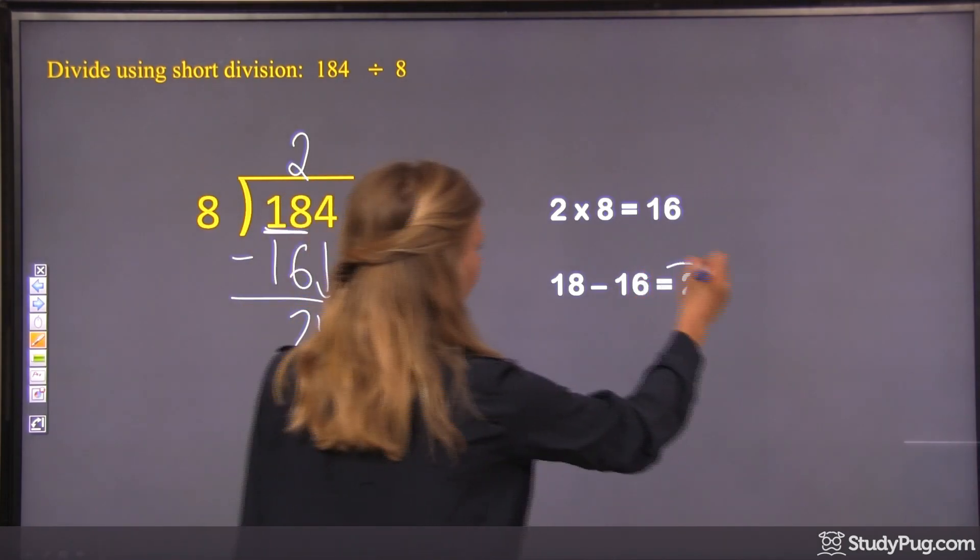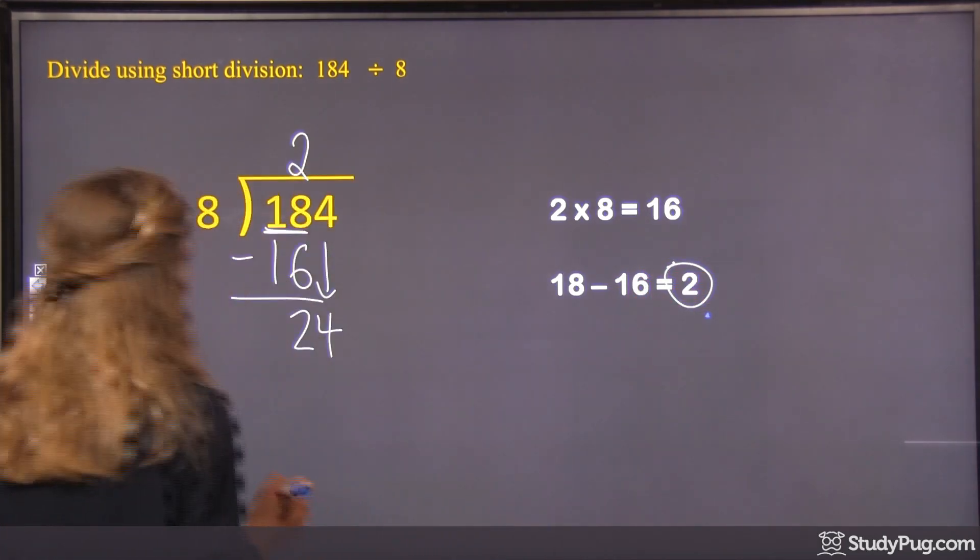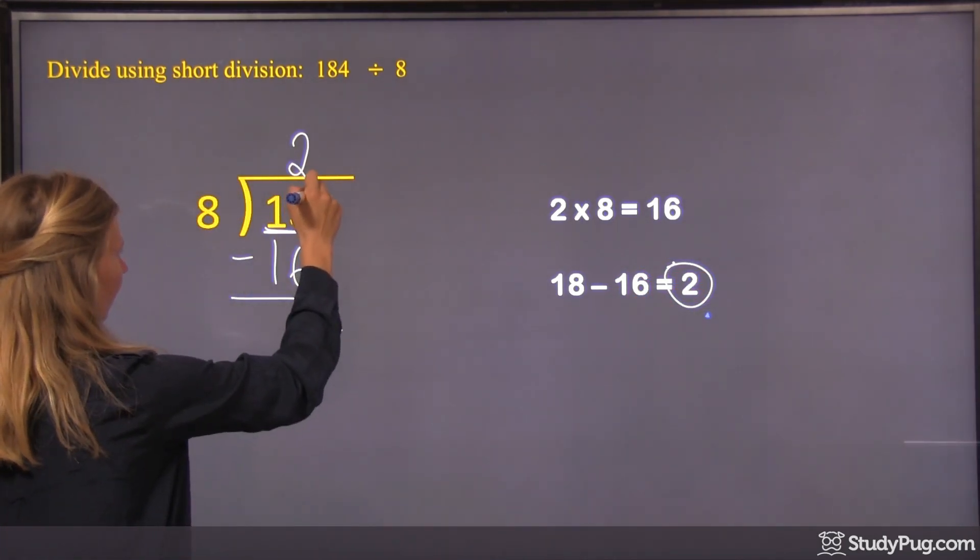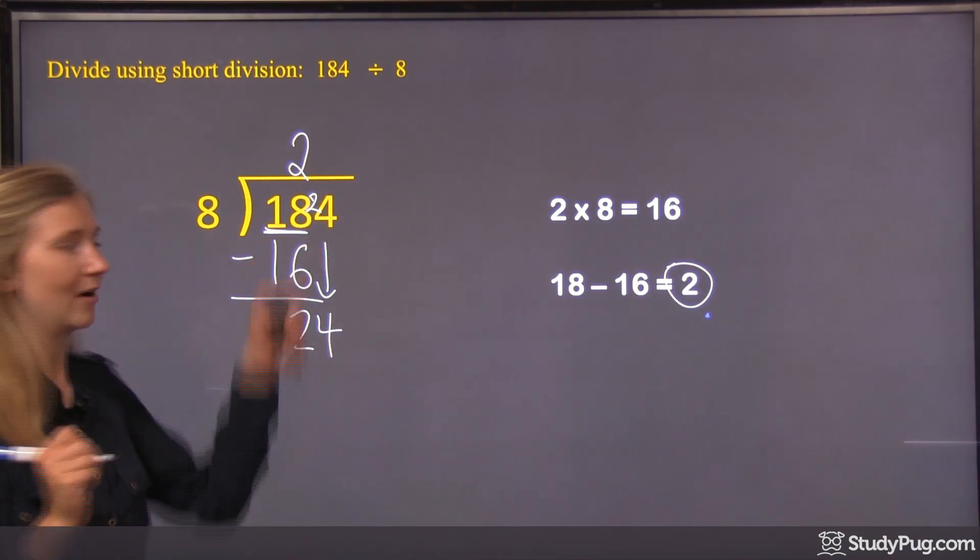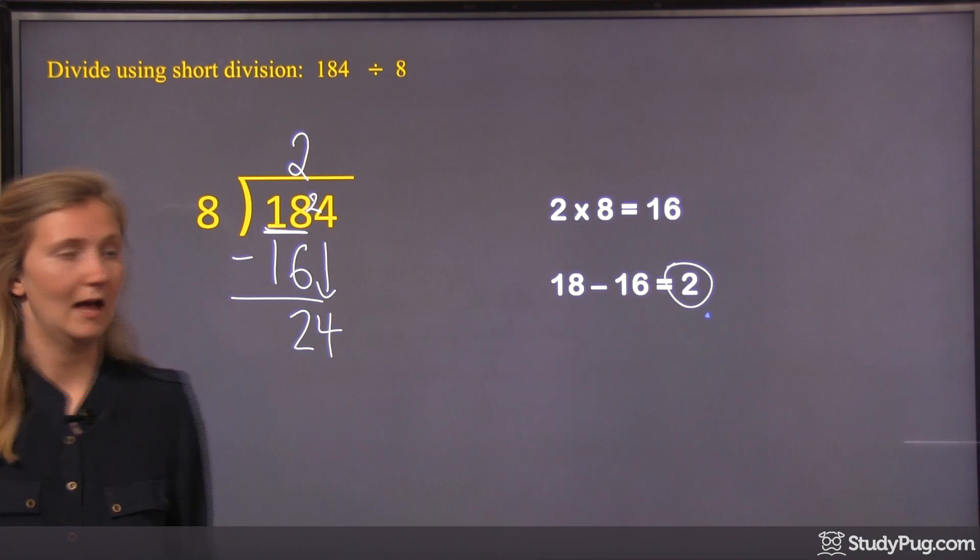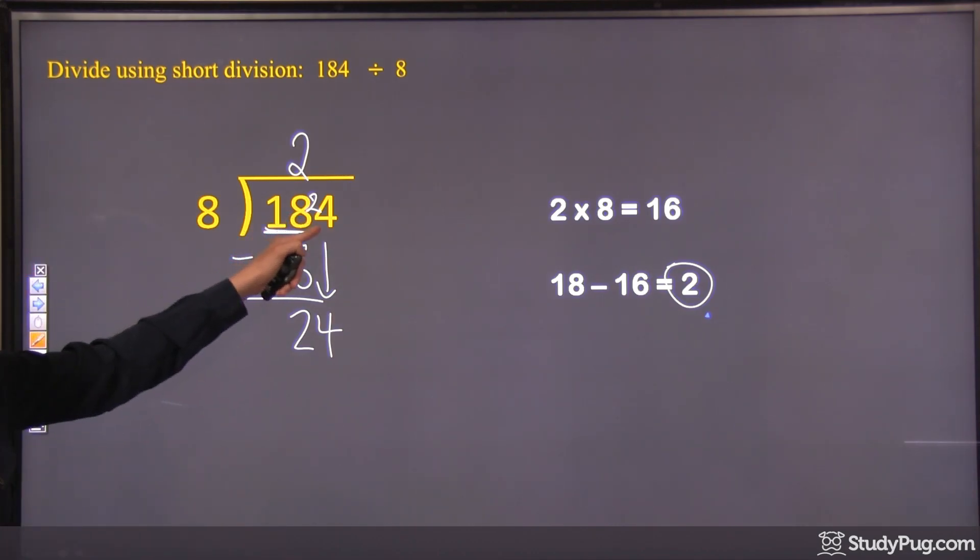And we take this 2 that we got from our subtraction. And we put it right here. We write a little 2 here. Does that look like a 2? Yeah, kind of in front of the 4.